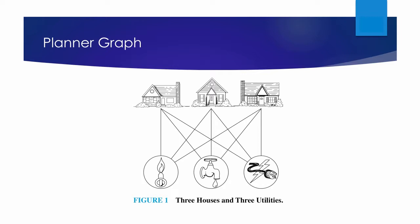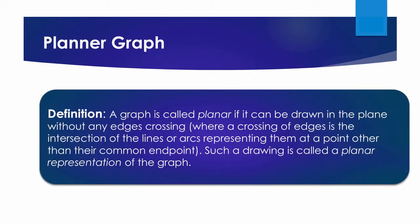In this video, we will study the question of whether a graph can be drawn in the plane without edges crossing. In particular, we will answer the houses and utilities problem. There are always many ways to represent a graph — when is it possible to find at least one way to represent a graph in a plane without any edges crossing? A graph is called planar if it can be drawn in the plane without any edges crossing, where a crossing of edges is the intersection of the lines or arcs representing them at a point other than their common endpoint. Such a drawing is called a planar representation of the graph.